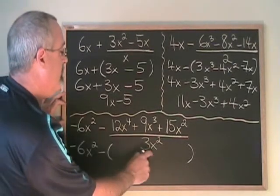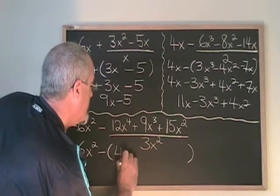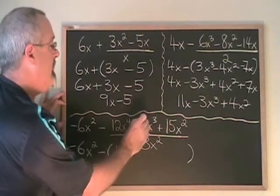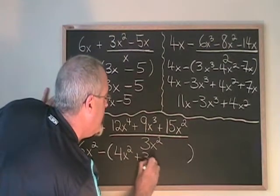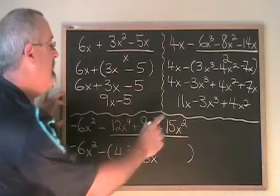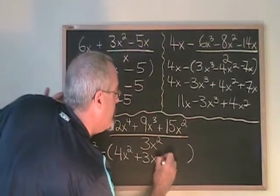12x to the 4 divided by 3x squared is equal to 4x squared. 9x cubed divided by 3x squared is equal to 3x. 15x squared divided by 3x squared is equal to 5.